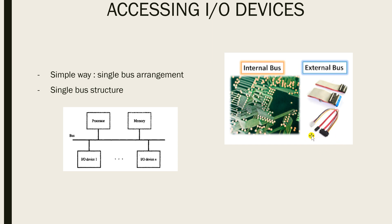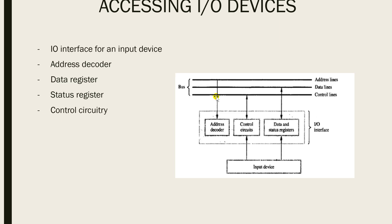Communication protocols are sets of rules or message formats that must be followed when communicating through the bus. In a single bus structure, the bus enables all connected I/O devices to exchange information. Typically, the bus consists of three sets of lines used to carry address, data, and control signals.